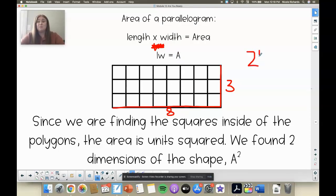But we would not just want to write 24. That's correct, but not quite the right answer. Since we are finding the squares inside of the polygons, the area has to be squared. We found 2 dimensions, length times width, so we square our answer. If we don't know what it was, we can just write units squared. This tells me that that was finding the area of something. So make sure we get that labeled correctly.